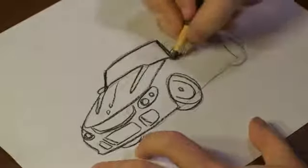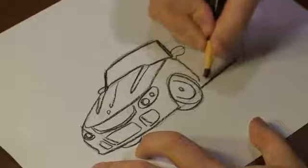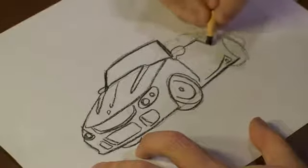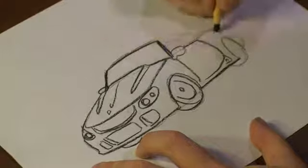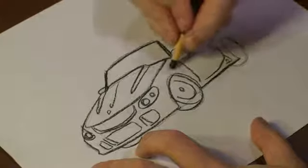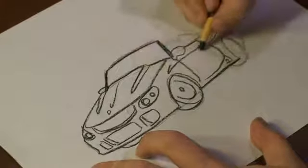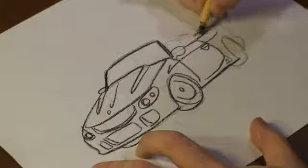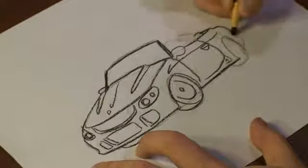Draw in the wheels. Start darkening out the rest of the car. And add a line across. Fill up the back.